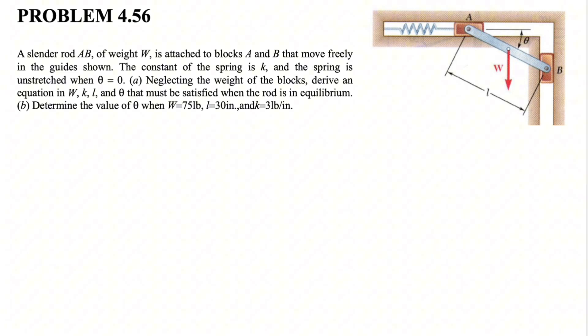As always, we're going to start with the free body diagram of the slender rod. We have the weight in the middle, and we have two normal forces at A and B. We're going to neglect friction between the block and the surfaces, so no friction, and we only have normal force.